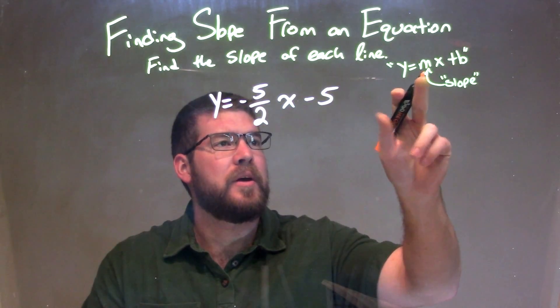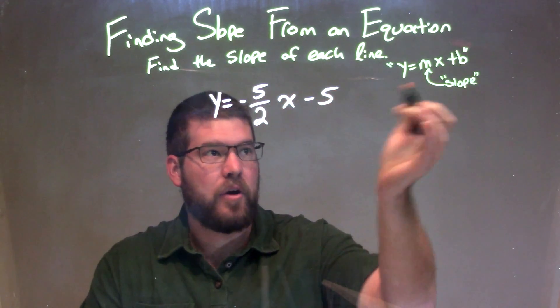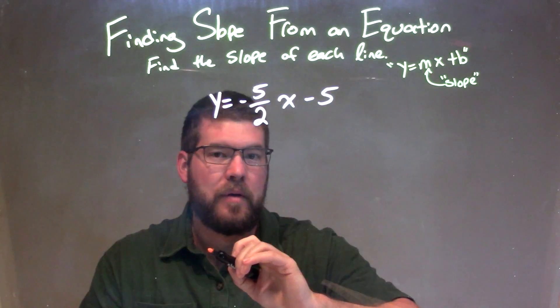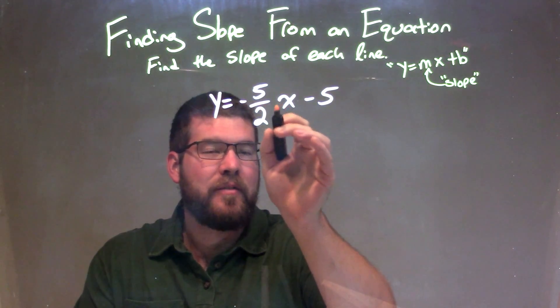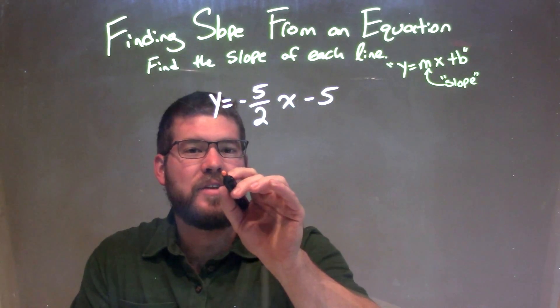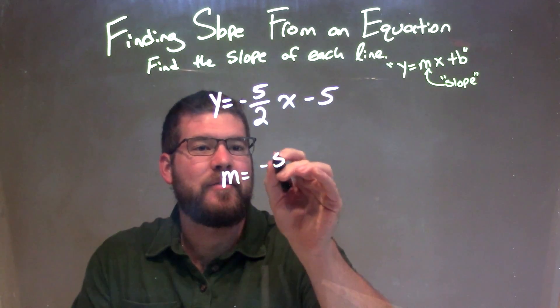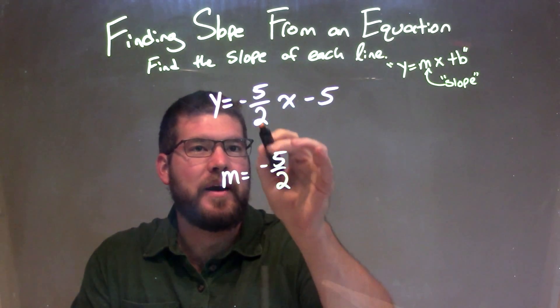So our slope here is what's right in front of x, our m value. Since we have this in slope-intercept form, it's pretty easy. Our slope is written right in front of x, it's the coefficient of x, and that is m equals negative 5 halves, right there.